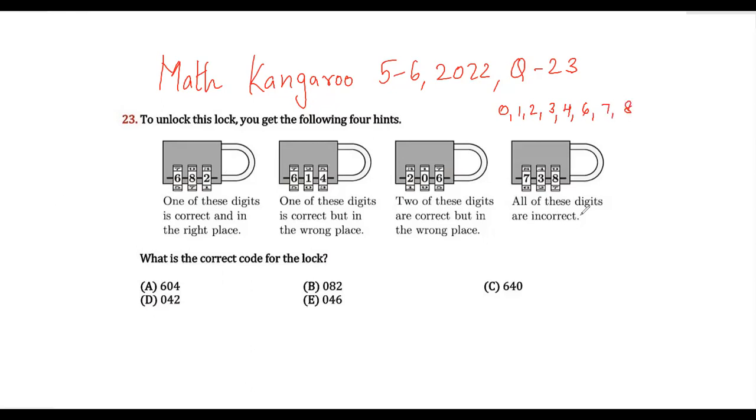Now if you see they are saying all of these digits are incorrect. So 3 is incorrect, 7 is incorrect, 8 is incorrect. So in the first case, 8 is incorrect.